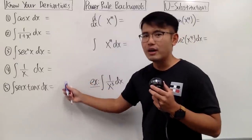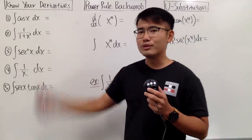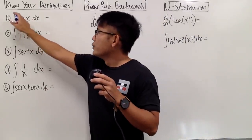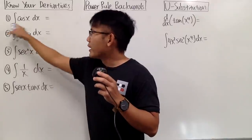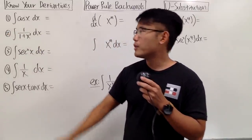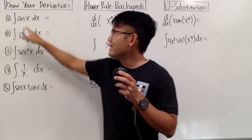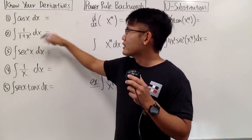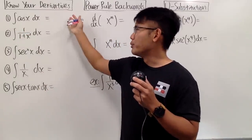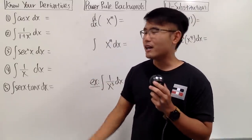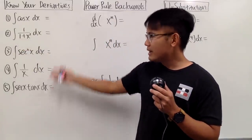Let's talk about the first technique. I just call this: you have to know your derivatives. You might be wondering, aren't we talking about integrals? Yes — take a look at the first one. To integrate cos x dx, this is an example of what we call an indefinite integral, where we don't have any limits of integration. To do this, we just have to find its antiderivative. We have to ask ourselves: derivative of what will give us cos x? And for the next one, derivative of what function will give us 1 over 1 plus x squared?